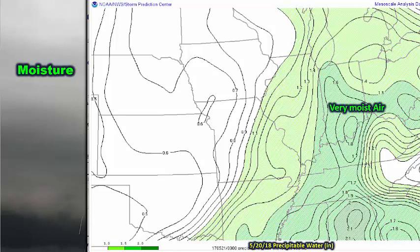First, with moisture — precipitable water, as shown on this image, is one way we can measure the amount of moisture within a column of the atmosphere. The very dark green colors across northwest Indiana and spreading into much of the Ohio River Valley show high values of precipitable water, indicating high moisture content, checking that box off our ingredients list.